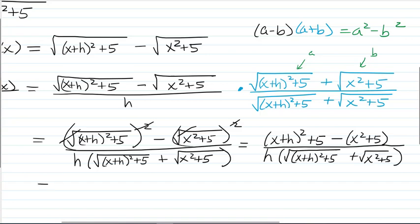And now we just multiply out the numerator. So here we're going to think x plus h times x plus h, which would be x squared plus 2xh plus h squared. We still have the plus 5. And then over here, we need to distribute our negative. So we have minus x squared minus 5.